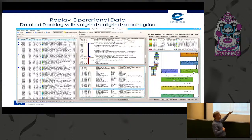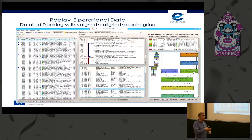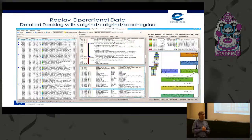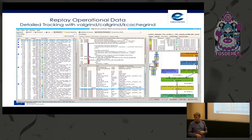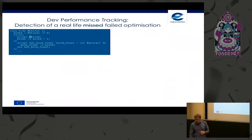We can see functions that consumed the most and see which conditions were called often true or false, down to assembly language. This is the main tool we use when we want to optimize specific algorithms or when we see a degradation. By the way, I'm also organizer of the Debugging Tools DevRoom, and tomorrow there is a talk about Valgrind — advertisement over.